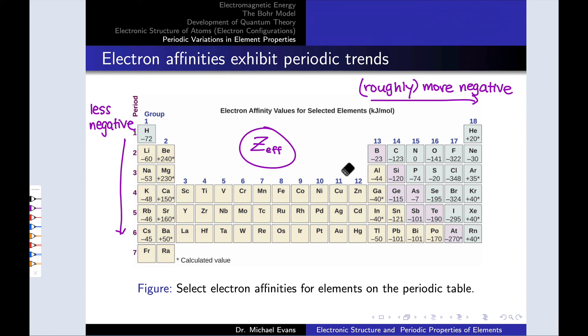This is all I'll say about electron affinity for now. If you're interested in the exceptions, I'll leave those as a cliffhanger and link out to some videos that explore the exceptions to the electron affinity trend in more detail. We won't dive into them here, but they're interesting and can be readily explained by orbital energy diagrams for these elements.